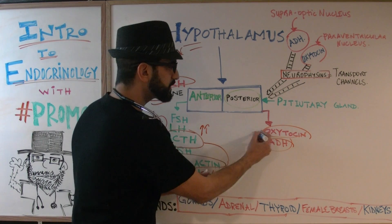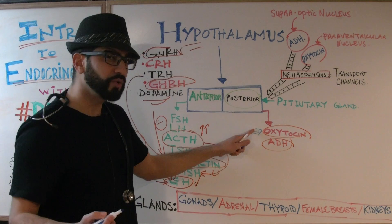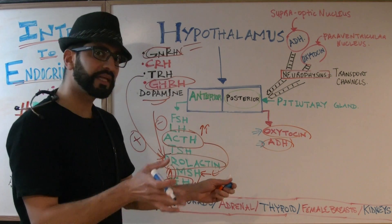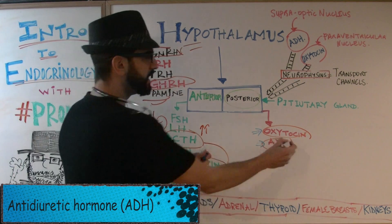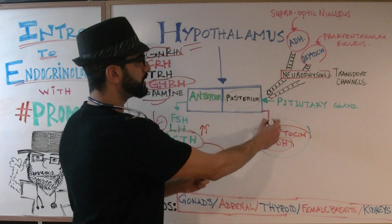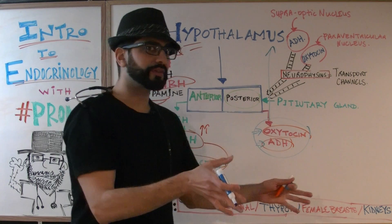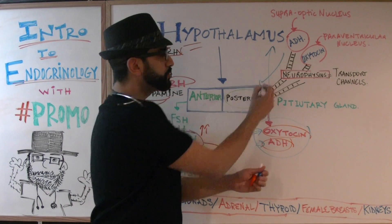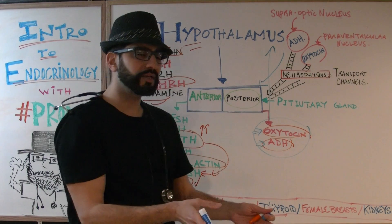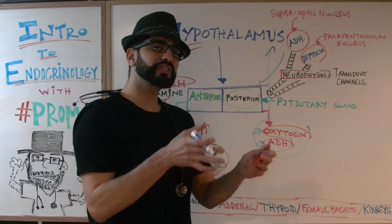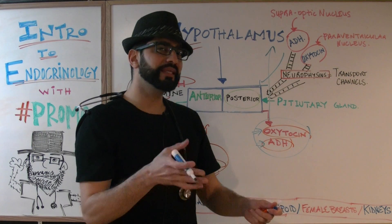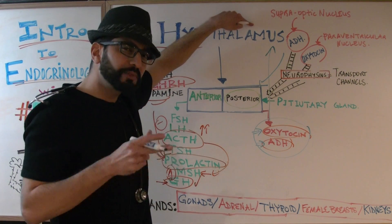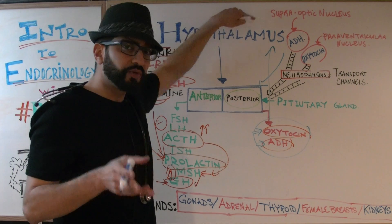The two main hormones of the posterior pituitary gland are oxytocin and ADH — antidiuretic hormone. These two hormones are actually produced in the hypothalamus and then brought to the posterior pituitary gland, where they are stored until the body needs them.